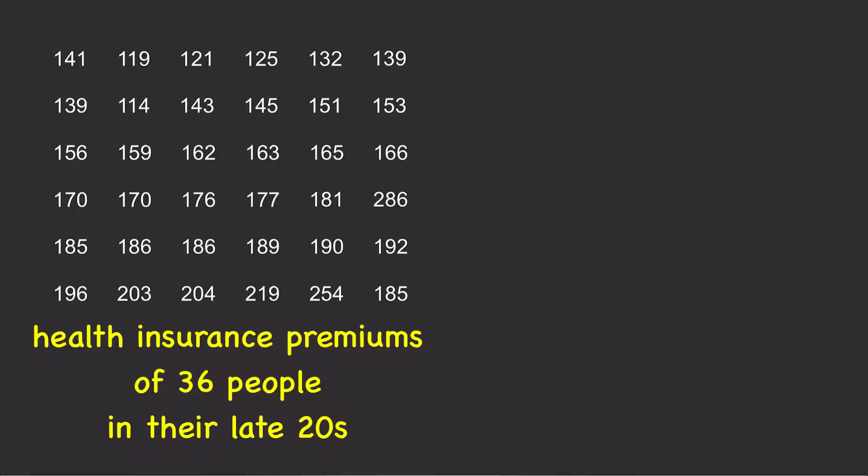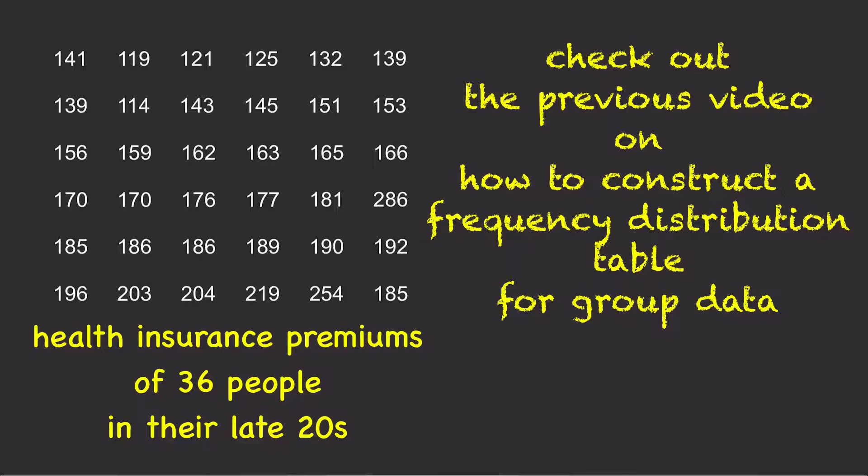This dataset contains the health insurance premiums for 36 people who were in their late 20s in 2014. You can check out the previous video on how to construct a frequency distribution table for grouped data.